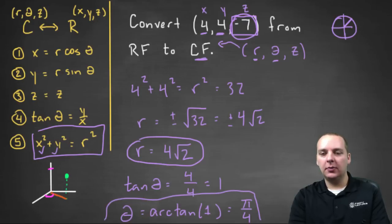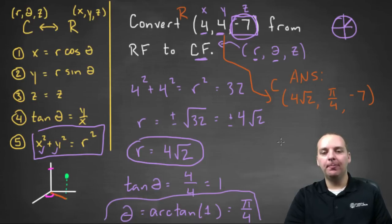So final answer, I'll jot this down in orange. Final answer, this guy's conversion in cylindrical form would be R theta Z, which would be four root two, comma, pi over four, comma, negative seven. This is expressing the same point, this is in rectangular form, but this is in cylindrical form.